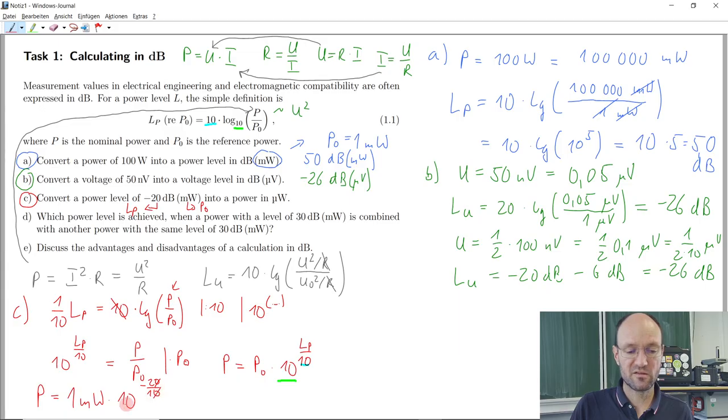So 20 divided by 10 is minus 2. 10 to the power of minus 2 is 1 over 100, or 0.01. So we get 0.01 milliwatt, and we want to have it in microwatt. So what do we do? Multiply by 1,000, because the conversion between them is 1,000. So we get 10 microwatt, and this should be the result.